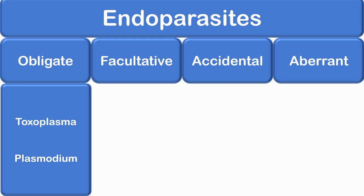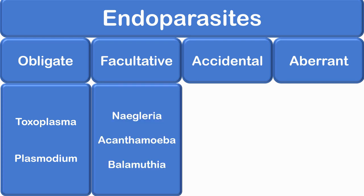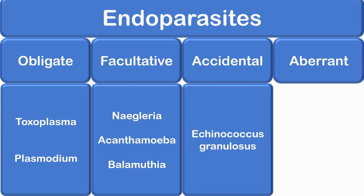Facultative parasites may either live as a parasitic form or as a free-living form — for example, Naegleria fowleri, Acanthamoeba, and Balamuthia. Accidental parasites in humans are those for whom humans are an unusual host — for example, Echinococcus granulosus infects humans accidentally, giving rise to hydatid cysts.